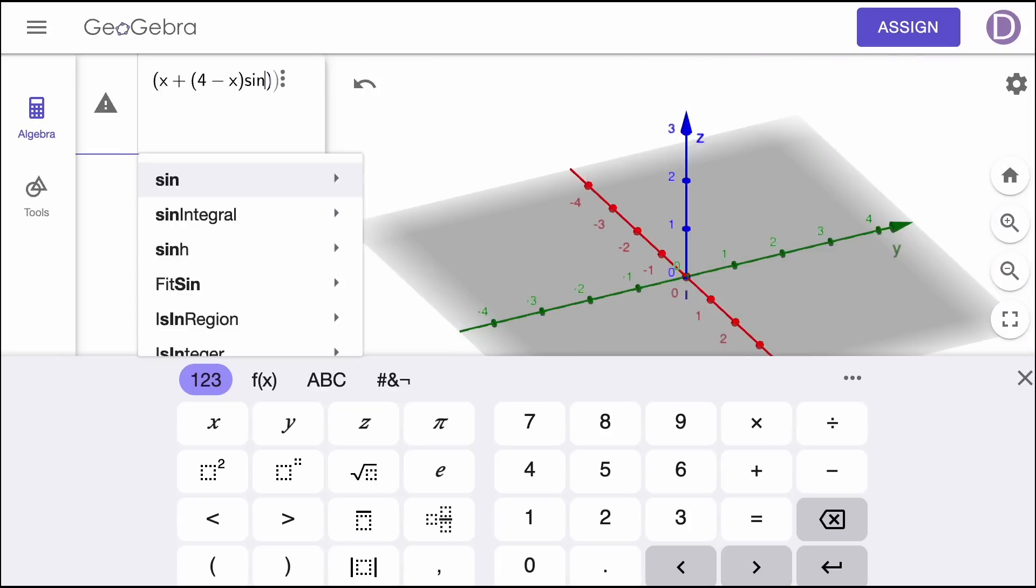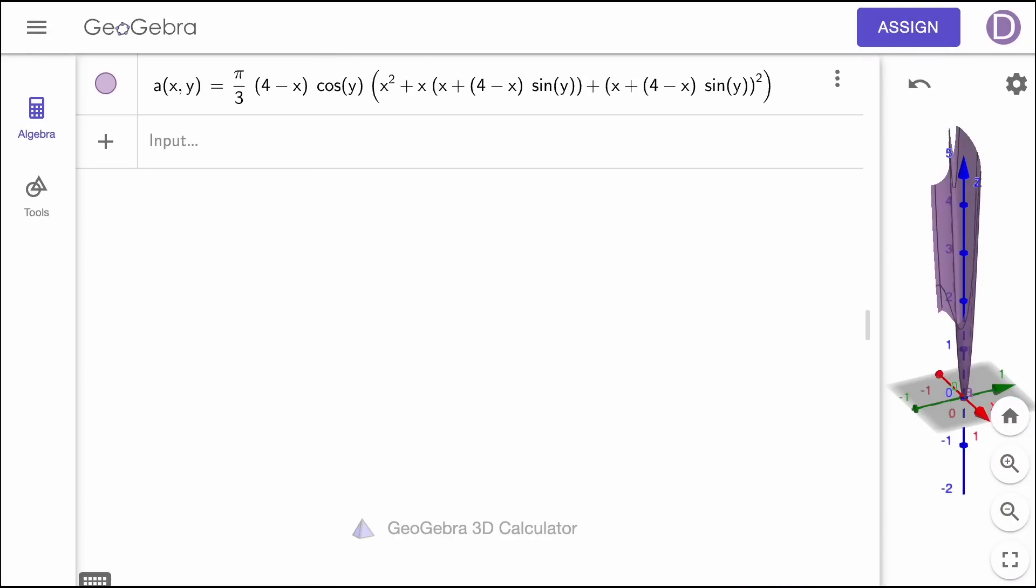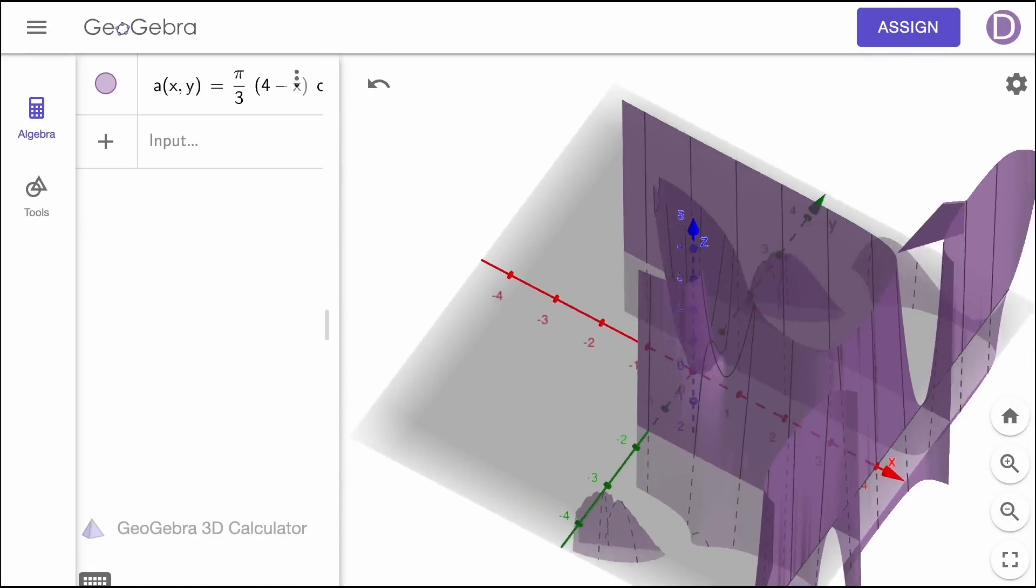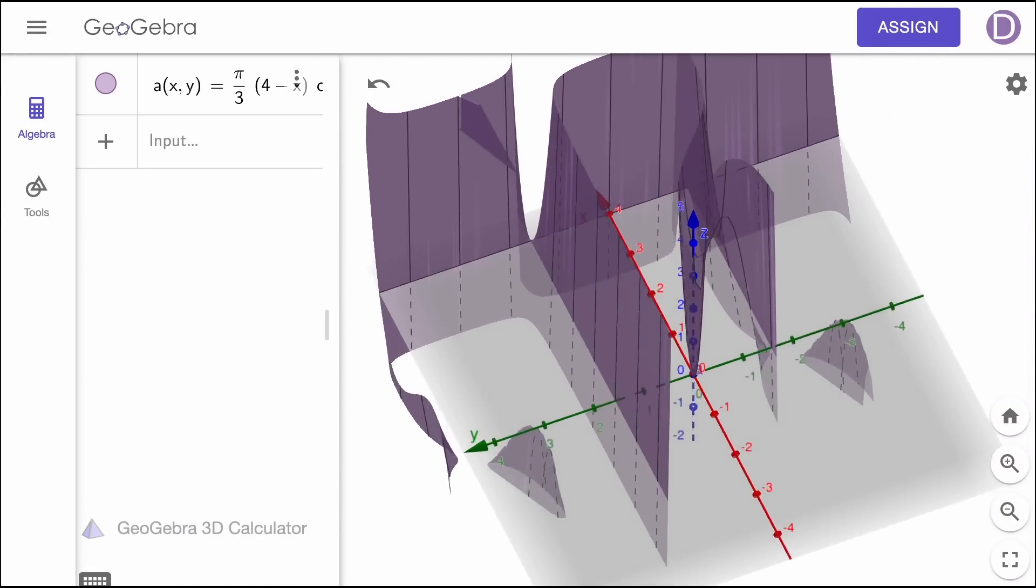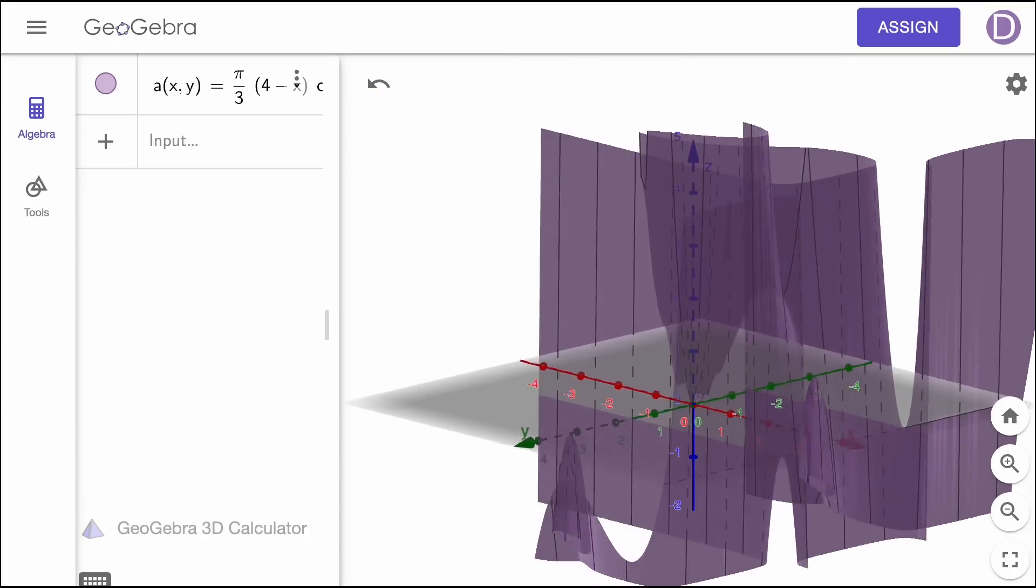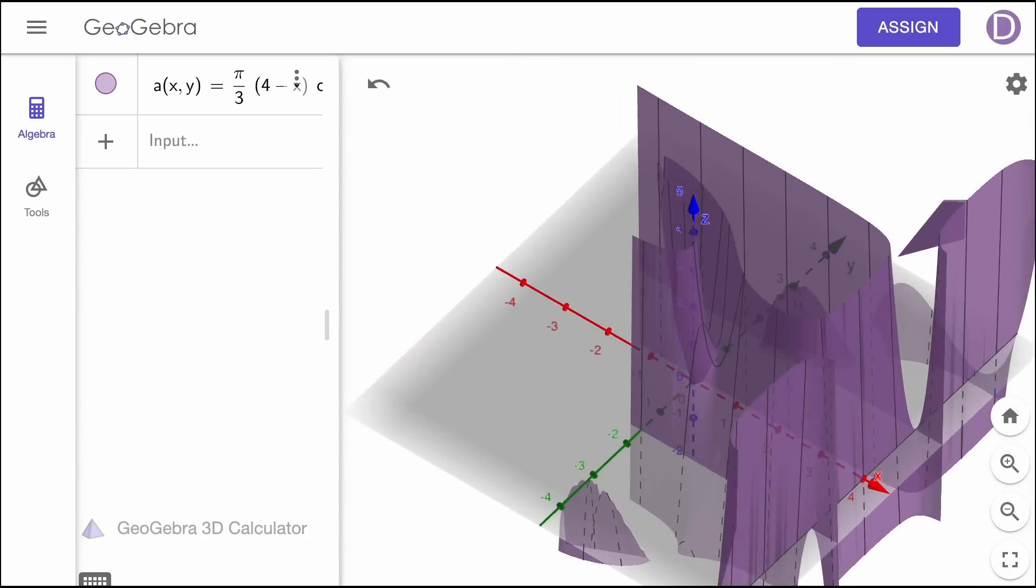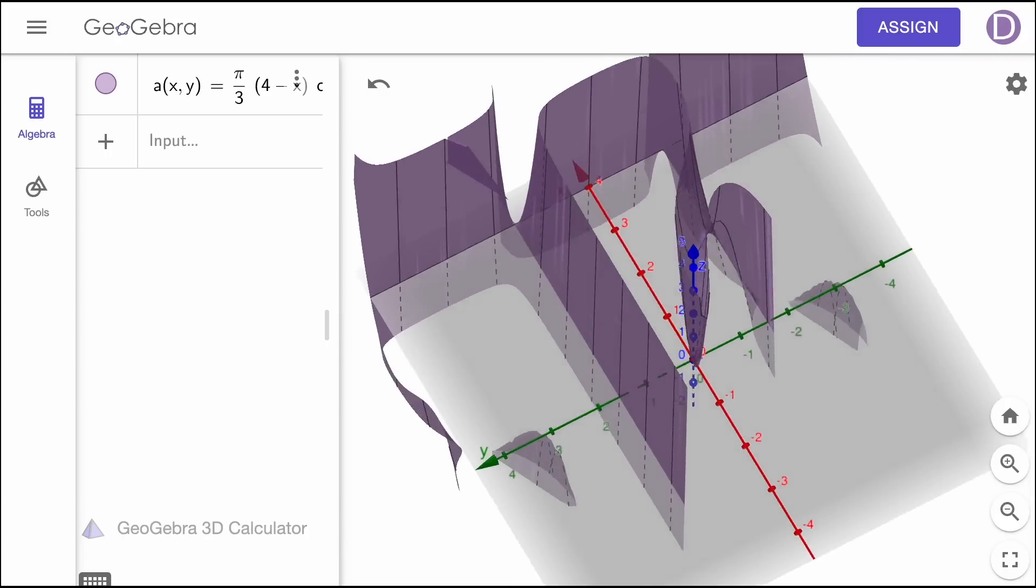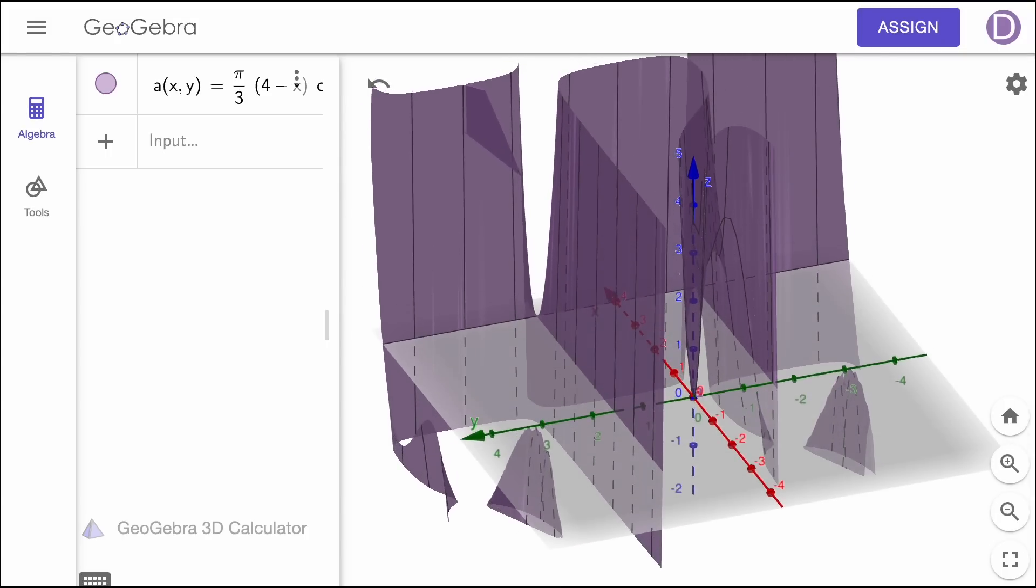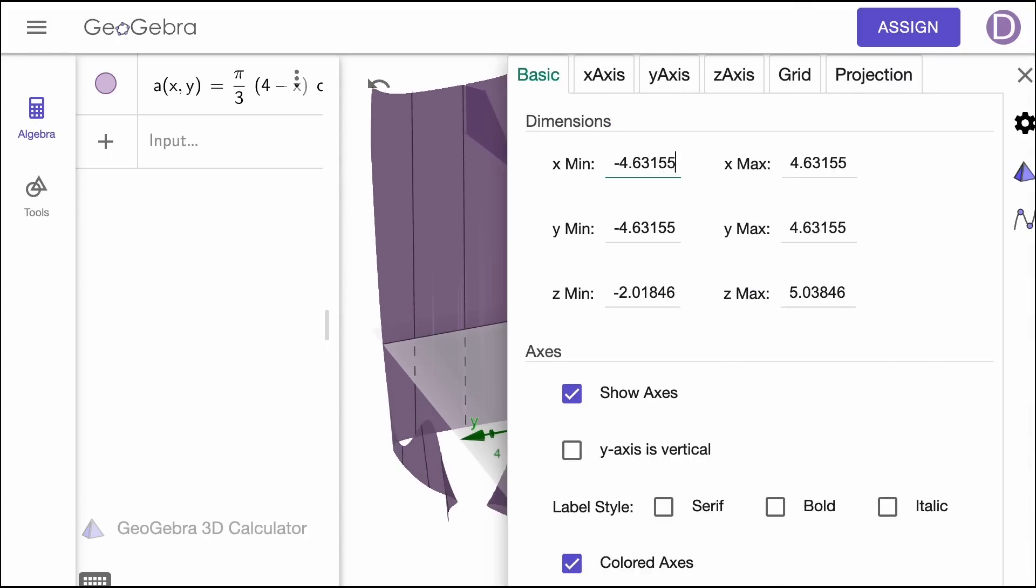If we let x represent the radius and y represent the angle, then we can graph the volume function over these two variables, but what we get is a surface, not a curve. In a 3D model like this, the x and y coordinates are represented in a horizontal plane, while our output, which is the volume, is the height above or below the xy plane. We want to find the maximum value, but honestly, this thing looks pretty crazy.